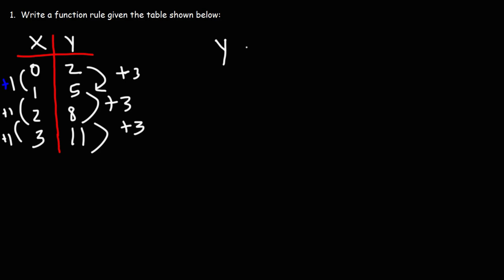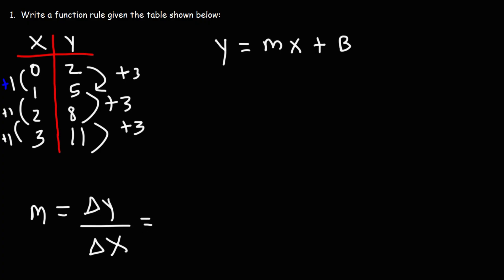Therefore we can use the equation y equals mx plus b — that's the equation for a linear function in slope-intercept form. The first thing we want to do is calculate the slope. The slope is the change in y over the change in x. Notice that the slope is constant: every time x increases by one, y changes by three. So the slope is three; that's our m value.